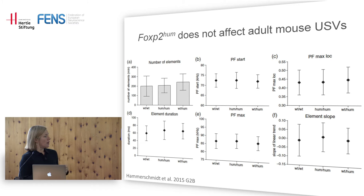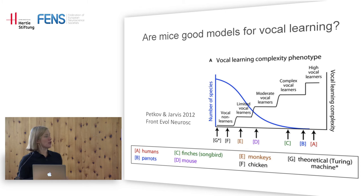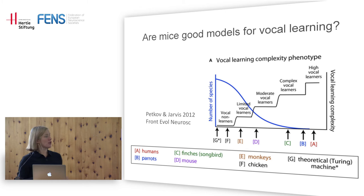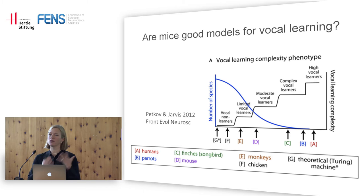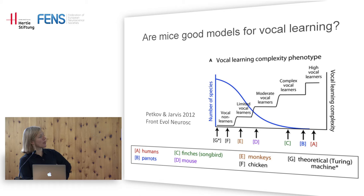We are the lab for negative evidence. A more interesting question is: are mice actually good models to study vocal learning? Are mice vocal learners? Petkoff and Jarvis said yes, and they said it's important to distinguish between different forms — there is not black and white, but a continuous distribution. From high vocal learners like humans and parrots down to non-vocal learners. They place the mouse here, claiming they are moderate vocal learners.